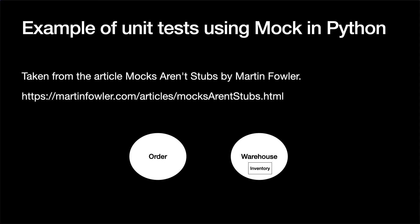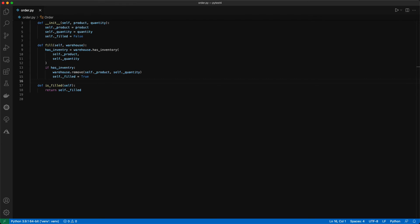Now let's look at an example of using mocks in unit tests. I will use an example from the article 'Mocks Aren't Stubs' by Martin Fowler. In this example, we have two classes, warehouse and order. The warehouse object holds inventories of various products. When we get an order object, we fill it from a warehouse object. If the warehouse has enough product, the inventory is reduced and the order is filled. If there is not enough product, the order is not filled. Here, let's assume that we already know the specification of the warehouse class, so we can implement the order class based on the specification.